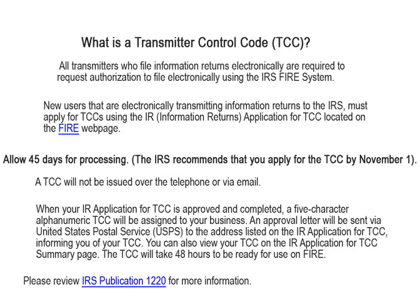When your application is approved and completed, a 5-character alphanumeric transmitter control code will be assigned to your business. An approval letter will be sent via United States Postal Service to the address listed on the information returns application for the transmitter control code. You can also view your transmitter control code on the information returns application transmitter control code summary page. The TCC will take 48 hours to be ready for use on FIRE. Please review Publication 1220 on the IRS website for more information.